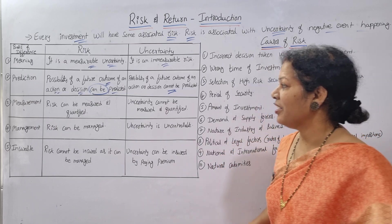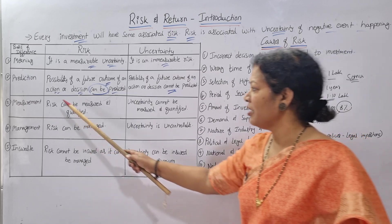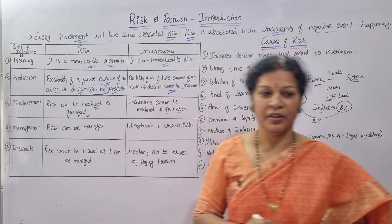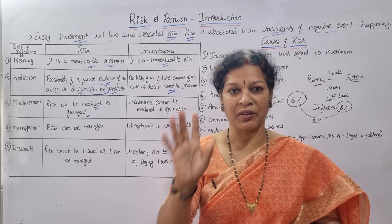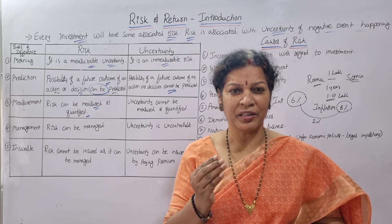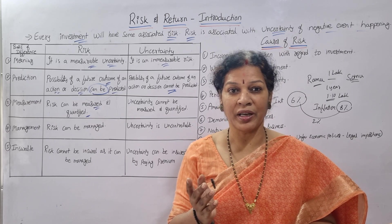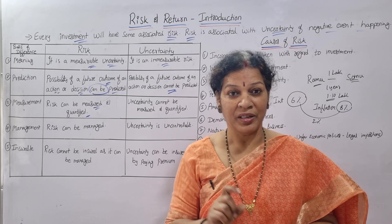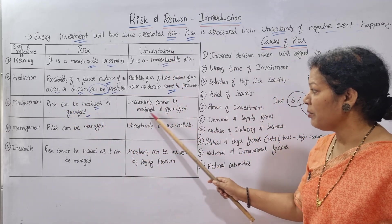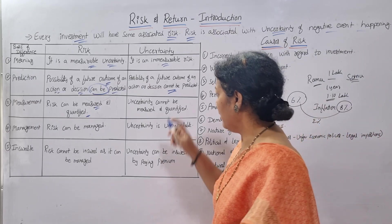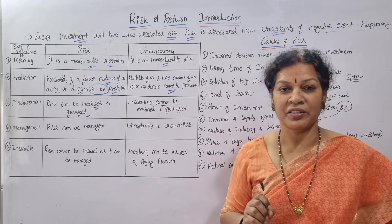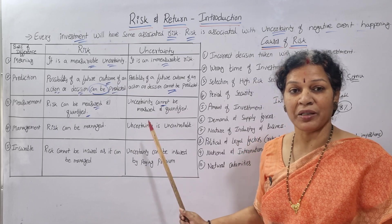Third point: Measurement. Risk can be measured and quantified. For example, if I keep one crore rupees in an organization, I have some idea — I may face a risk of around 20 or 30 lakh. I can estimate a quantity. But uncertainty cannot be measured and quantified; you cannot say I will lose 20 or 30 lakh — that is simply not possible.